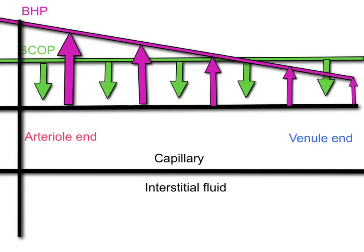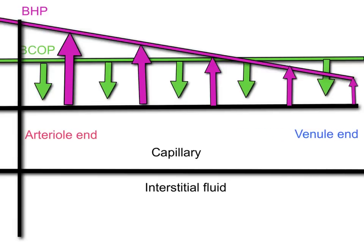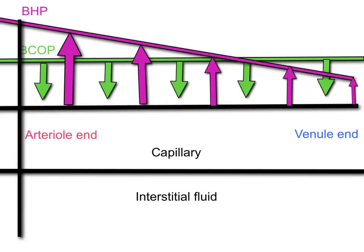This diagram helps explain the fluid movement across the capillary. This is the capillary here. We have the arterial end, which is going to be closest to the heart, and we have the venule end, which is going to be further away from the heart. The fluid exchange is occurring across the capillary and into the interstitial fluid.